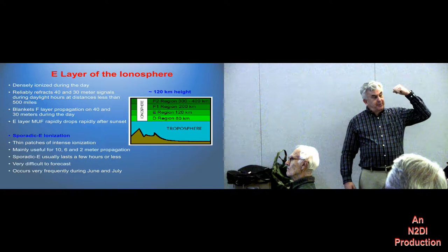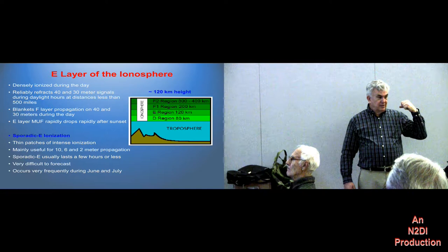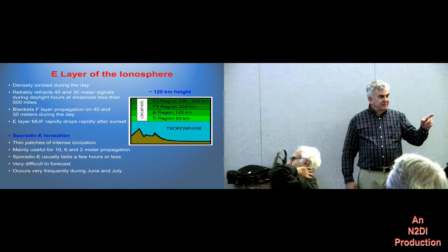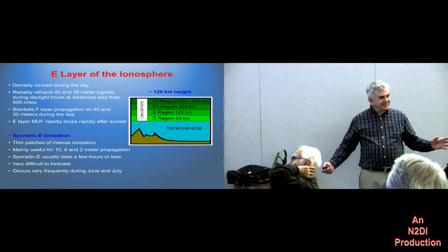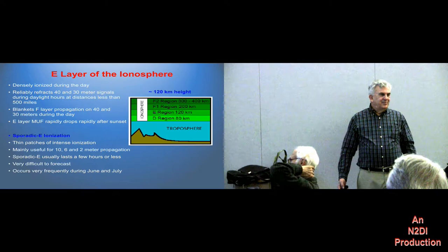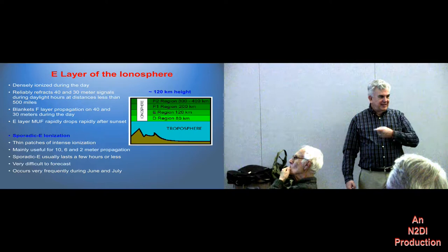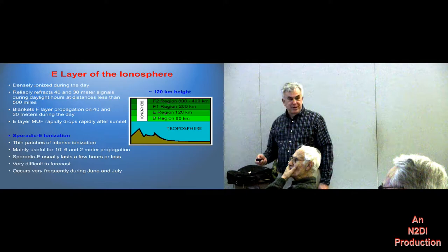Up here in the Northern Hemisphere, we were in our weak E season, so E propagation in December was unusual. Because people were working New Zealand that night all the way from Maine to Missouri — it wasn't focused in the Northern Hemisphere. So exactly what it was is uncertain. Is it possible it was a combination — a couple hops of E and then an F hop? Nobody knows. But it was certainly unusual.